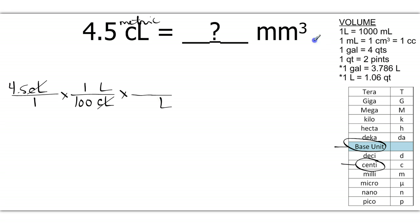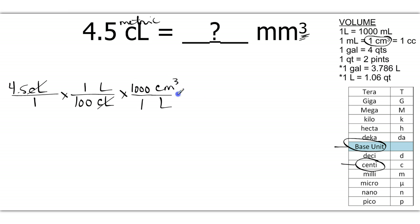Now you might be wondering where we go from here. Anytime you have a cubed unit, your goal is always to get to centimeters cubed — that's what bridges everything together. We know that one liter equals 1,000 centimeters cubed, so we go directly there. Anytime you have a cubed unit — inches cubed, feet cubed, yards cubed, millimeter cubed, decimeter cubed — you always want to get to centimeters cubed first, and then you can go from there. Liters cancel and I bring down centimeters cubed.